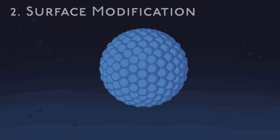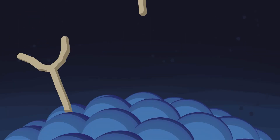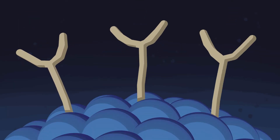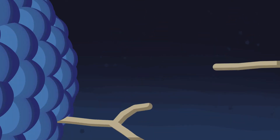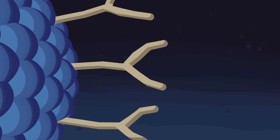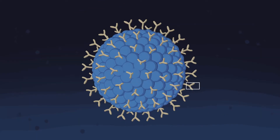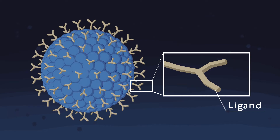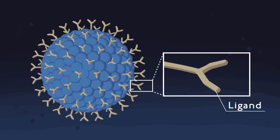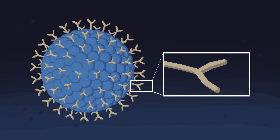The nanoparticle then undergoes surface modification to keep it from being absorbed by other cells in the immune system. The nanoparticle surface is covered with lipids and bioactive molecules called ligands, which allow the nanoparticle to target specific tumor cells.